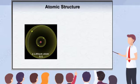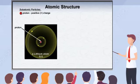A brief review of atomic structure will acquaint you with some of the terms used in this program. Atoms consist of positively charged particles called protons, neutral particles called neutrons, and negatively charged particles called electrons.